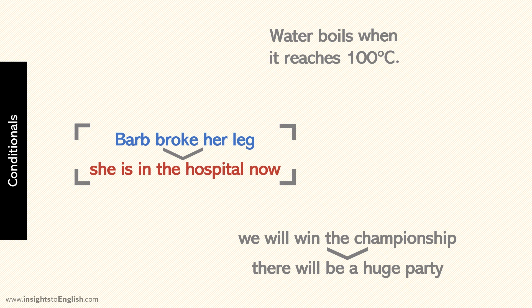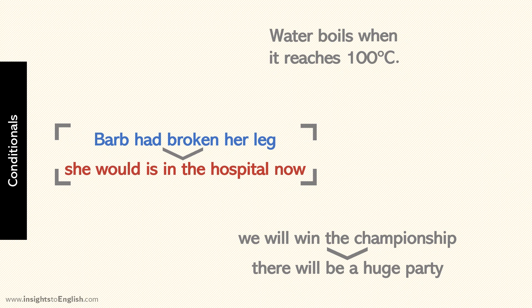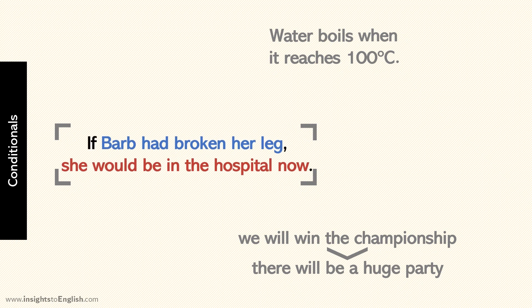The next is unreal. Okay, so we shift broke back to had broken, and we add would to the result. Would is? No, would be. If Barb had broken her leg, she would be in the hospital now.